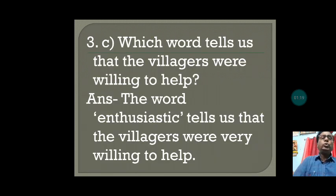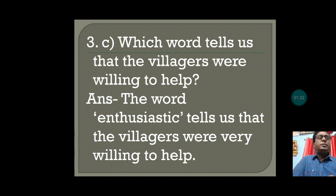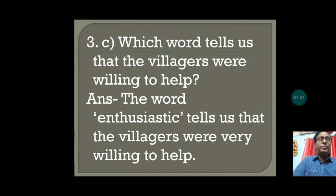As I told you, up to question 3B I had already explained in the last video, and this second video starts at 3C. The question is: which word tells us that the villagers were willing to help? We have to find out which word in the text tells us that the villagers were willing to help, as they were very active and wanted to help the medical team.